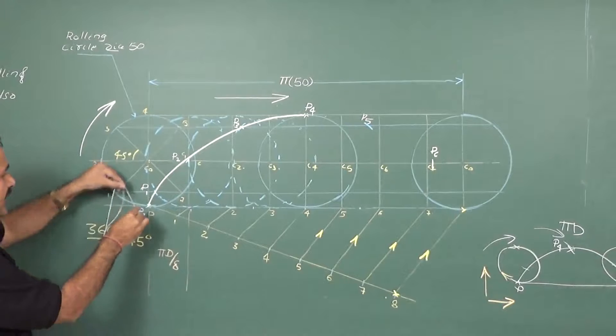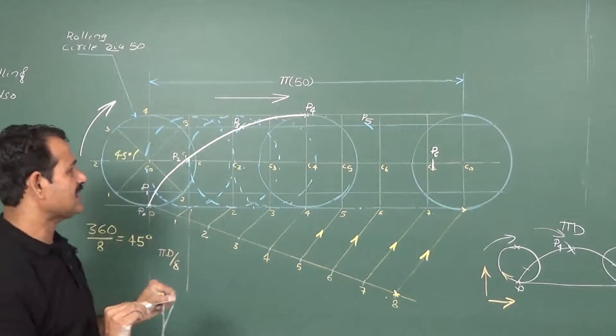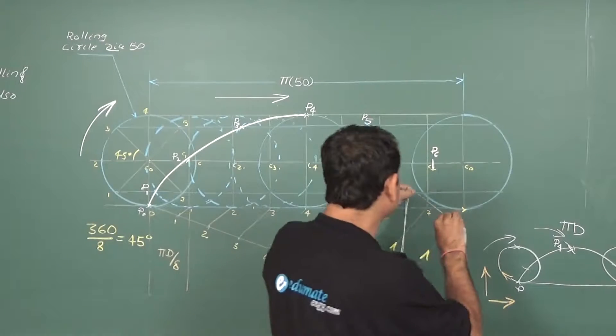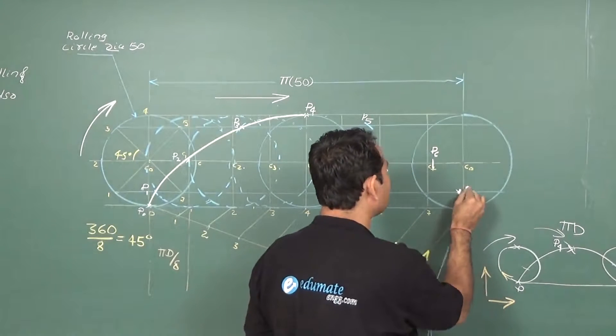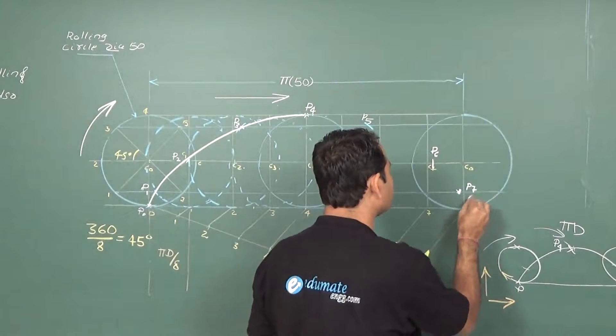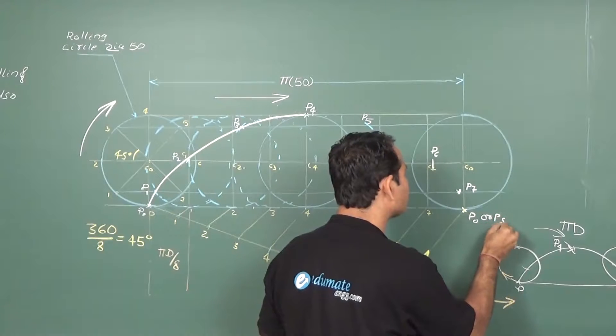To get P7, once again go back. Take the radius. The radius will remain same. The center has to be C7. Keep it over here. Cut the arc. This will be P7. And the last point on the curve will be P0 or P8.